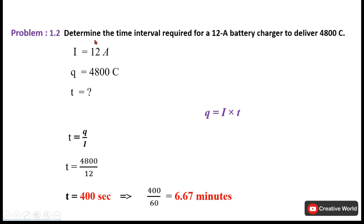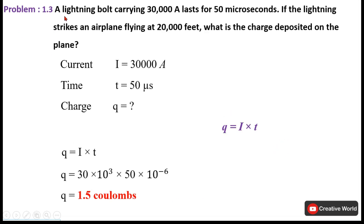Problem 1.2: Determine the time interval required for a 12-ampere battery charger to deliver 4800 coulombs. Current and charge are given; we need to find time. Using T = Q / I and performing simple mathematics, we get time = 400 seconds, which divided by 60 gives the time in minutes.